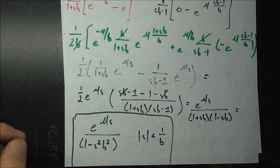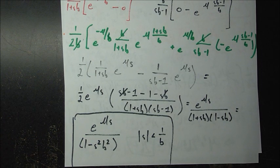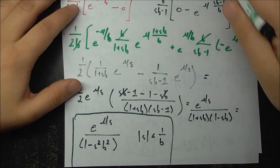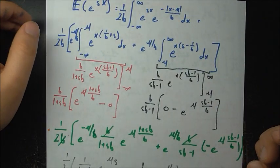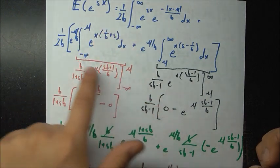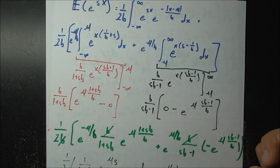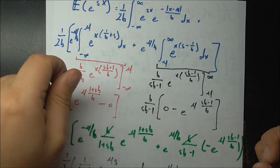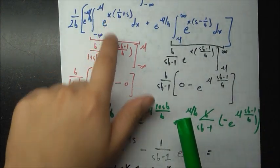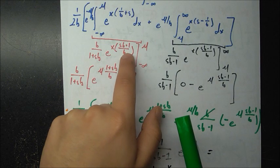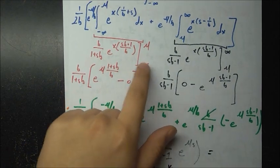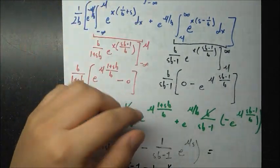There is a nuance here. In MGFs, we always need to check whether any steps hold only under certain assumptions. The key step to examine is evaluating the integrals. When we plug in negative infinity for x, we need the integrand to vanish rather than blow up; otherwise the integrals would not converge and we would not have an MGF.